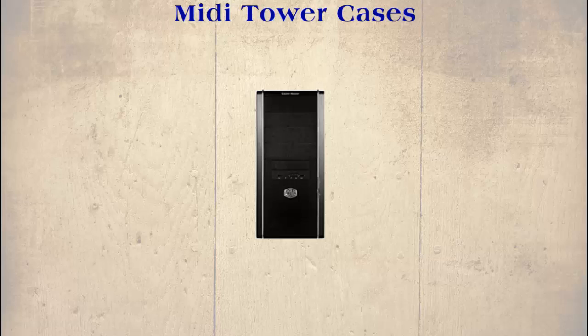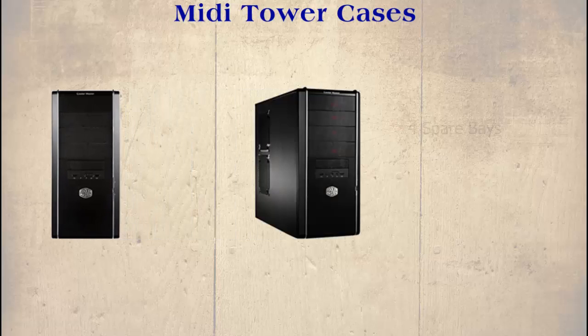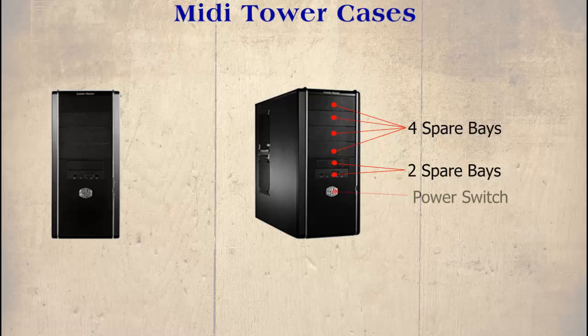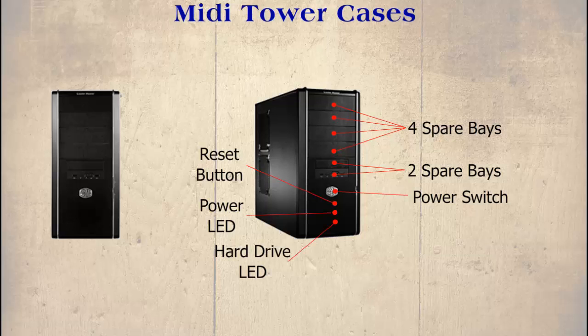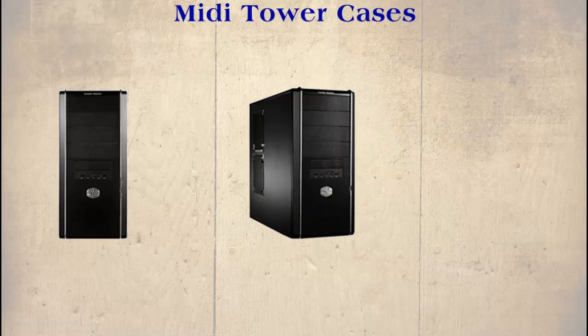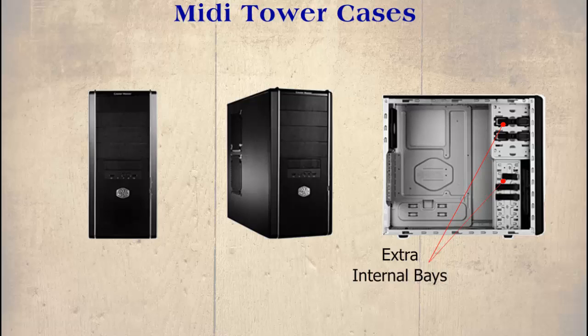A mini tower case usually offers a lot more space for multiple devices. For instance, in this example there are four spare bays, and also two smaller bays. You will also find a power switch, a reset button, and a power and hard drive LED. If we remove one of the panels and stand it on its side, we can see extra internal bays, so it can support more devices than our previous example, the desktop and the mini tower.